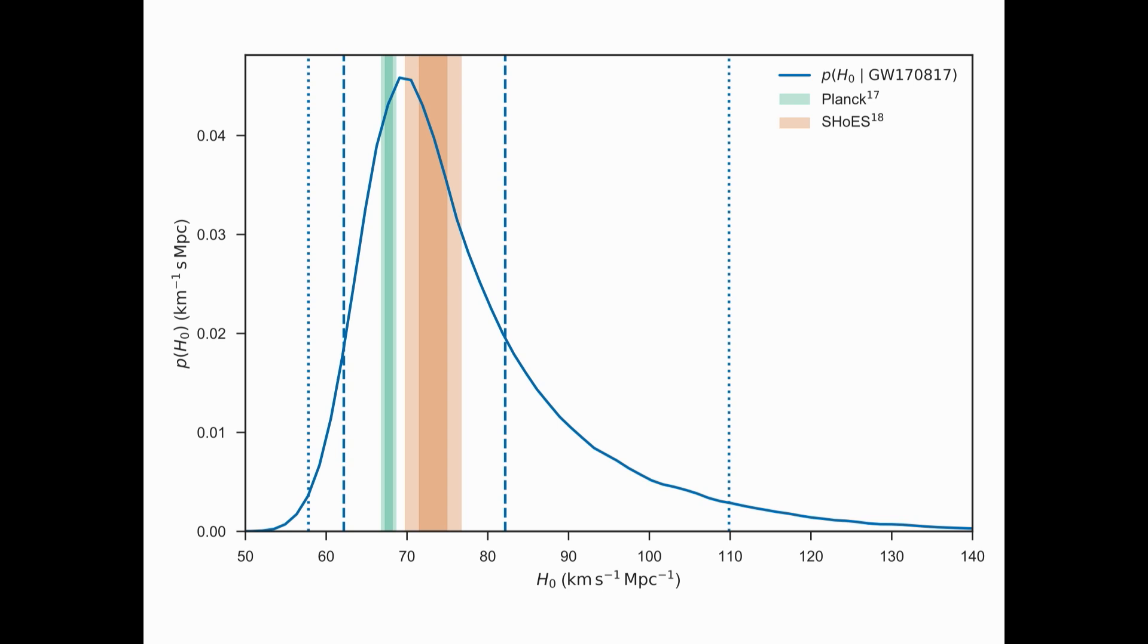Those two bands are competing electromagnetic measurements, and they are currently much more precise than our measurement. However, they disagree. One of them looks at the early universe and measures the size of the universe and gets one answer, and one of them looks at the nearby universe and measures the size of the universe and gets a different answer. As gravitational waves, as more gravitational waves from these events are detected, that curve will narrow, and we may be able to choose between the early universe and the local universe measurements. And that could be a hint to new cosmological physics.